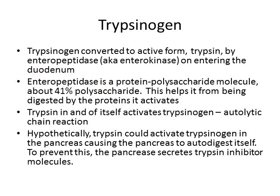Trypsin itself is also capable of activating trypsinogen. We then have an autolytic chain reaction whereby trypsinogen converted into trypsin will then allow trypsin to split more trypsinogen into active trypsin, and so on. Hypothetically, if you accidentally activate some trypsin in your pancreas, that would lead to a chain reaction within the pancreas itself, and the pancreas could easily digest itself.